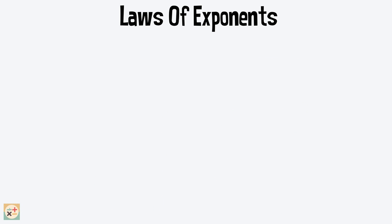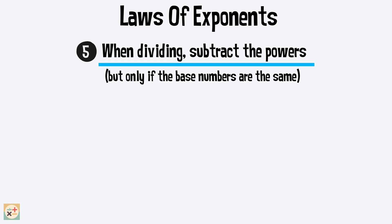Law of exponents number 5: When dividing, subtract the powers. Again, this only works if the base numbers are the same. Here, we have exponents of 5 and 3. So for the answer, we keep the base number the same and take away the exponent of 3 from the exponent of 5, leaving us with an exponent of 2.